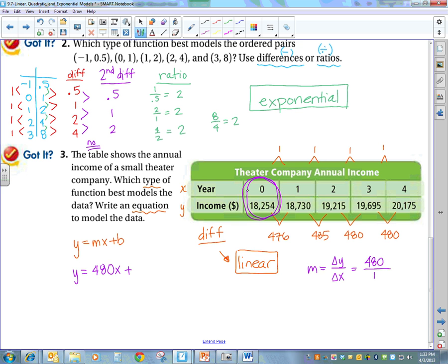So when you have 0, the other number is going to be your b. So I get to write y equals 480x plus 18,254. And that is the function that models our data and that sums up linear and quadratic and exponential models.